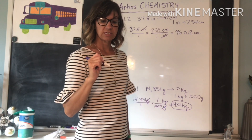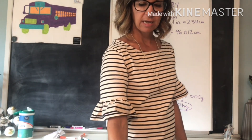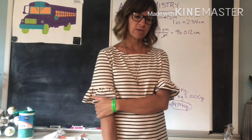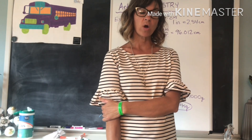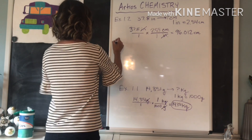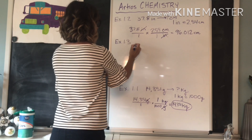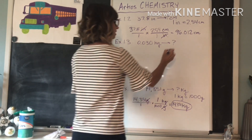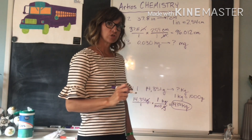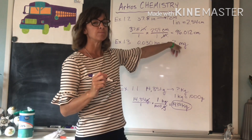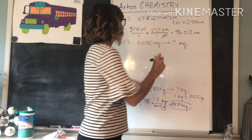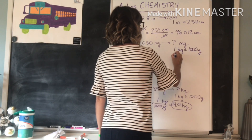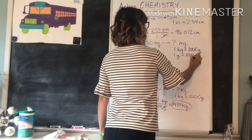There's one more type of conversion to practice — a little more complex. Example 1.3 on page 12: the mass of an object is 0.030 kilograms — what is the object's mass in milligrams? We don't know the direct relationship from kilograms to milligrams, but we know that 1 kilogram equals 1,000 grams, and 1 gram equals 1,000 milligrams.